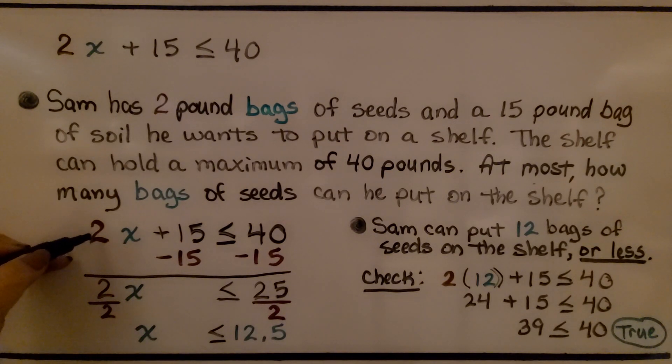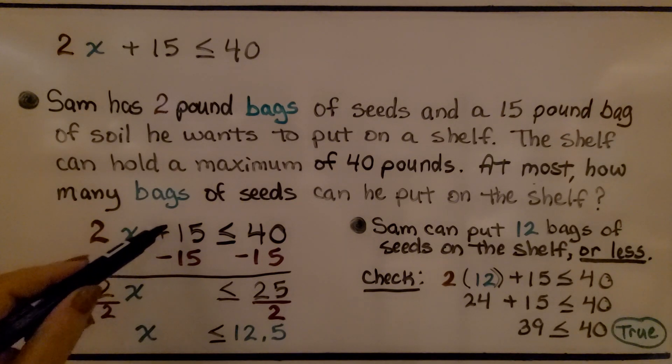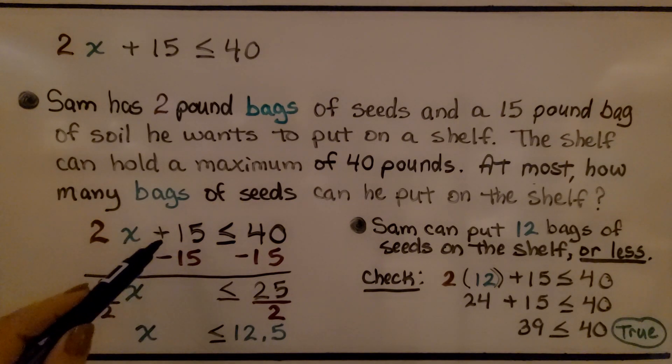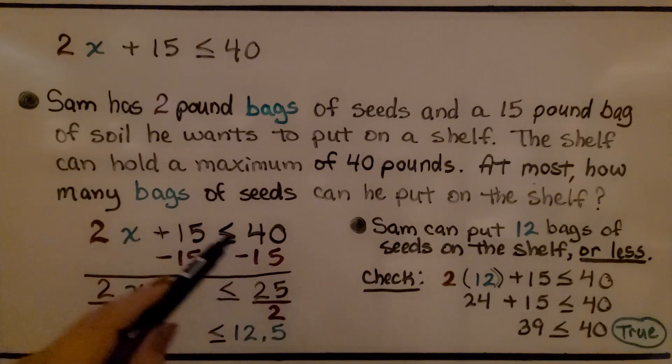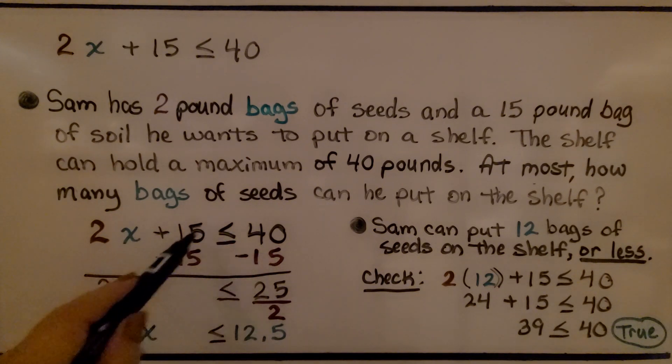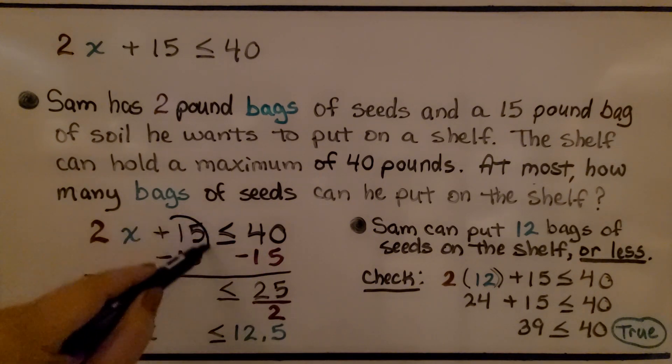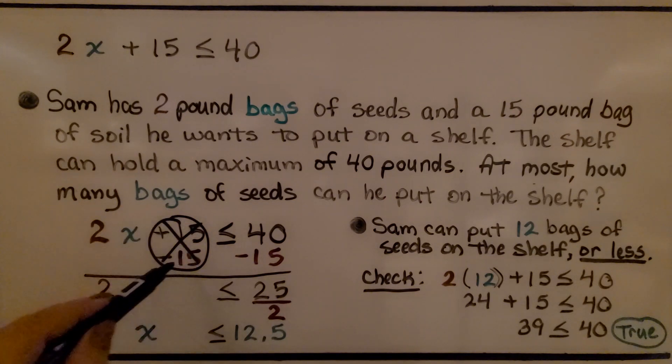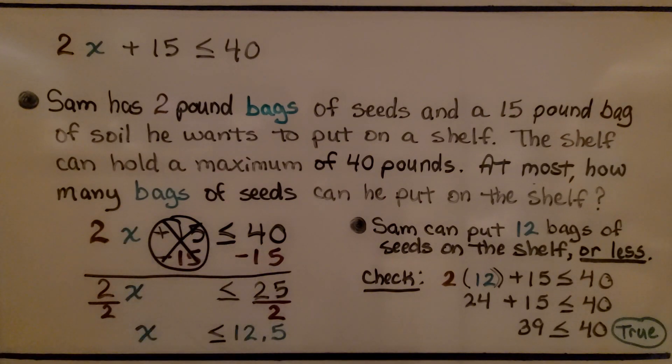So, each bag of seeds is 2 pounds. He has a 15 pound bag of soil. We can remove the soil weight of 15 pounds from each side of the inequality. That'll eliminate it by subtracting 15, subtracting 15.